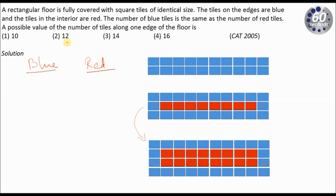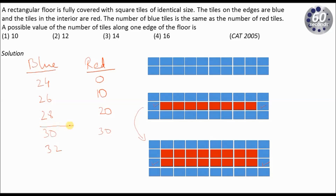So 10 cannot be the number of tiles on one edge. Let me try the next option — 12. The number of blue tiles to start with, when there are 0 red tiles, will be 24 (12 plus 12). Then it increases by 2 each step: 26, 28, 30, 32 and so on. The number of red tiles starts at 0. With 12 tiles on an edge, there are 10 tiles in between, so each layer adds 10 red tiles: 0, 10, 20, 30. Here I observe that when blue equals 30 and red equals 30, they are equal. So 12 can be my answer.